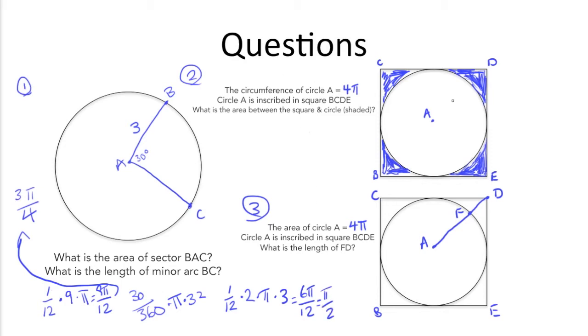Moving on to number 2. Here we have a circle with a circumference of 4 pi. We know that this circle, circle A, is inscribed in this square BCDE. We're trying to find the area between the square and the circle, which is the shaded area.